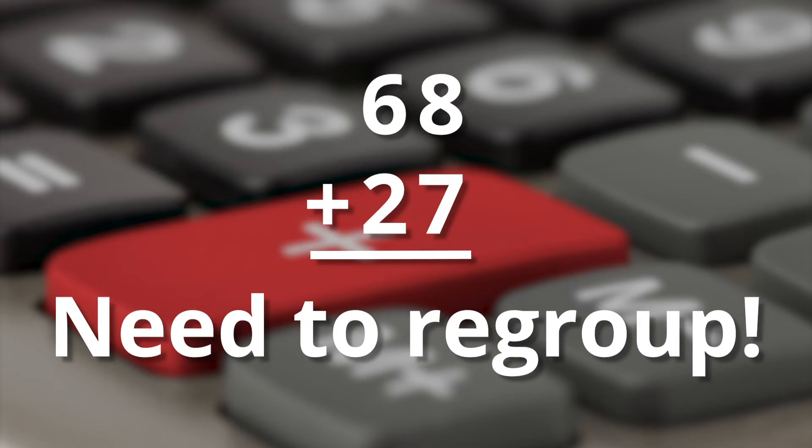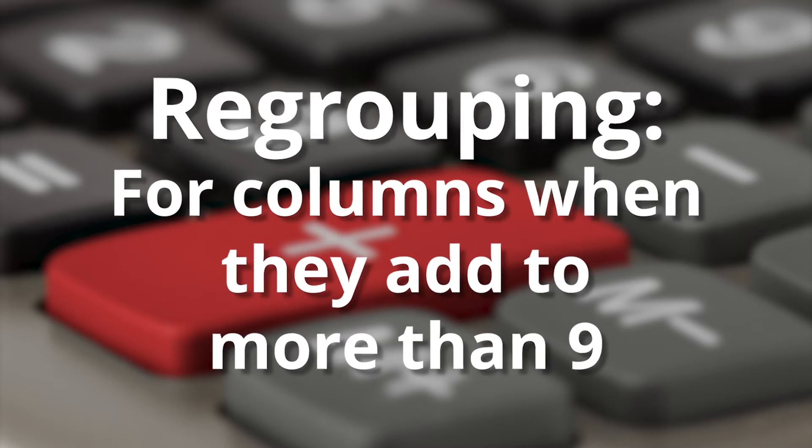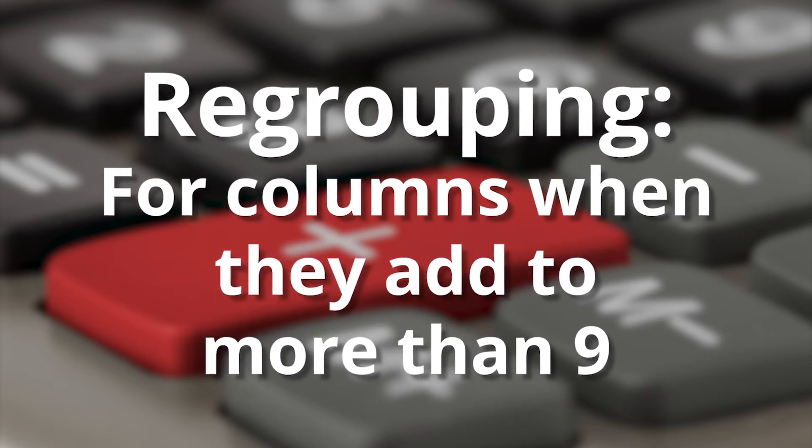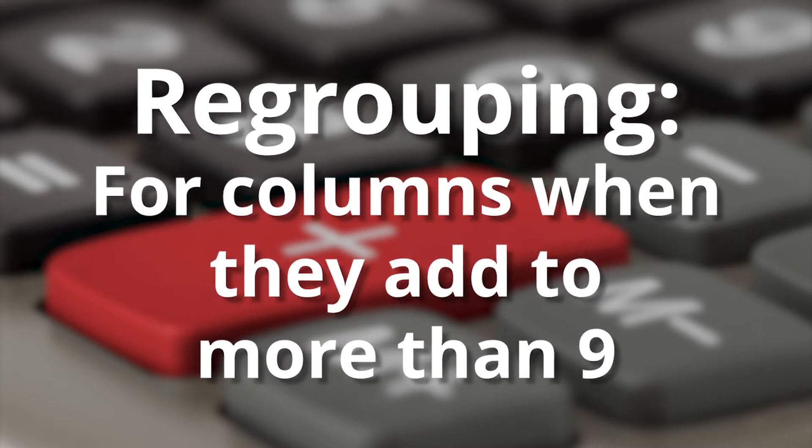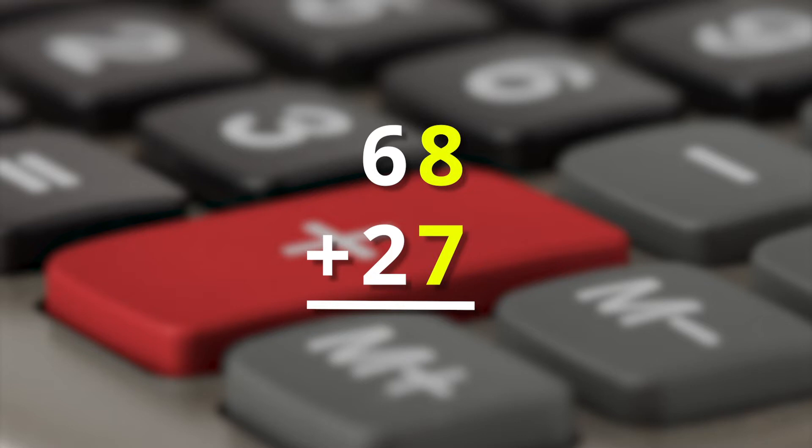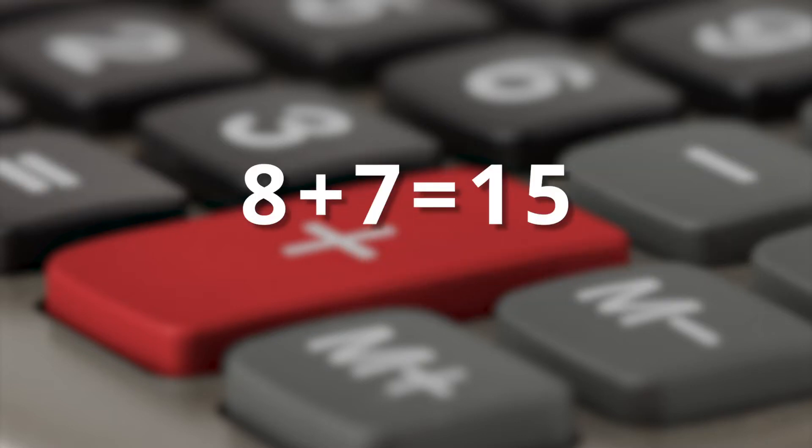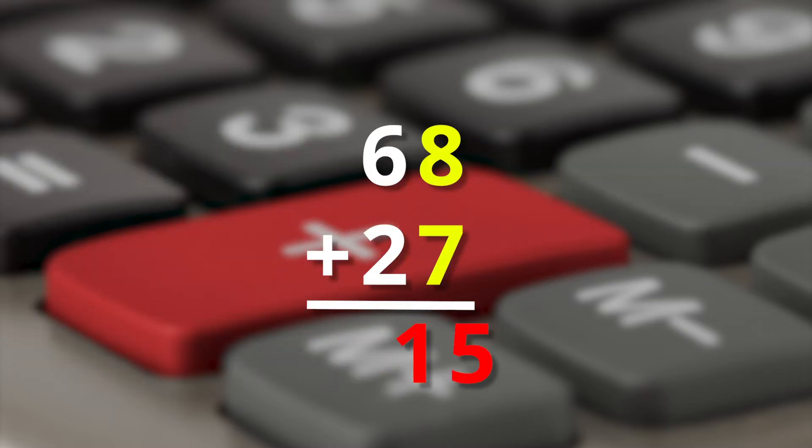Hey, let's dive right in. Remember, regrouping must be done for all place value columns when they are greater than nine. Okay, so here we have sixty-eight plus twenty-seven. First, add the numbers in the ones column. The sum of eight and seven is fifteen. And since you can't write fifteen in that column, it needs to be regrouped into one ten and five ones.